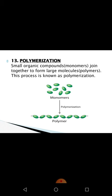The last characteristic is polymerization. Small organic compounds, which we call monomers, join together to form large molecules called polymers, and this process is known as polymerization. These are the important characteristic features of organic compounds.